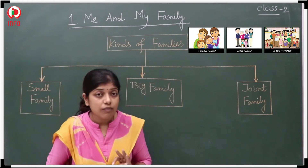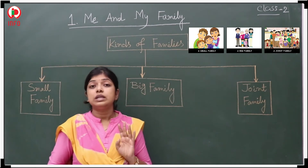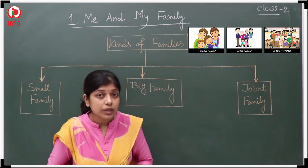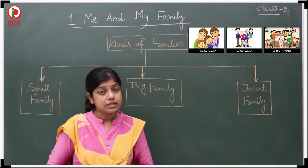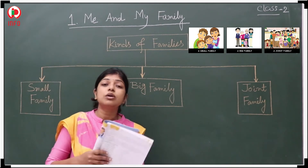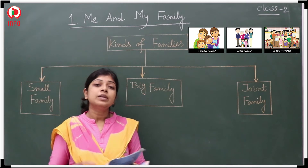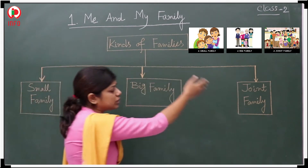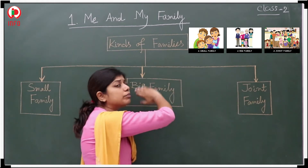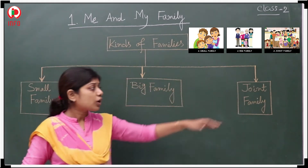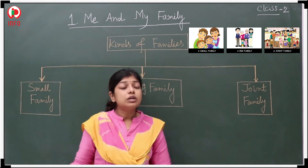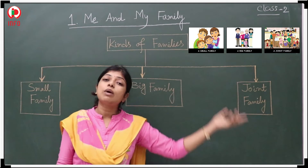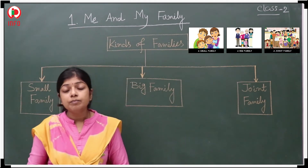One more thing: small family is also called the nuclear family. And the joint family is also one version of the big family, because in a joint family the number of family members is large.